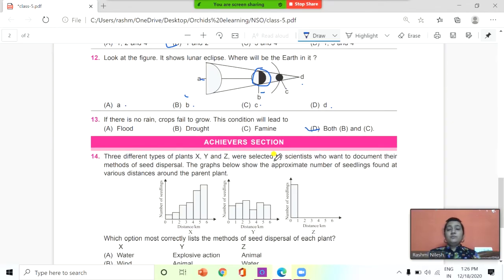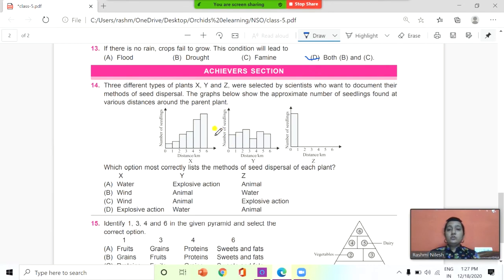Question number 14. Three different types of plants X, Y, and Z were selected by scientists who want to document their method of seed dispersal. The graph below shows the approximate number of seedlings found at various distances around a parent plant. You need to study this graph very carefully. Which option most correctly lists the method of seed dispersal of each plant? Now see the options here. Option A: X, Y, Z. This is X figure, X graph, Y, and Z. Option A: X is water, Y is explosive action, Z is animal. In the same way, B: wind, animal, water. Wind, animal, explosive action. And explosive action, water, and animal. So which is the correct answer here? It is C: wind, animal, explosive action.